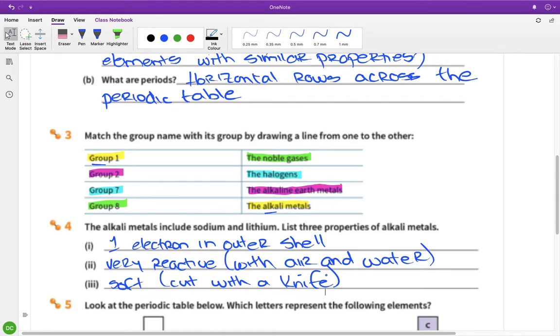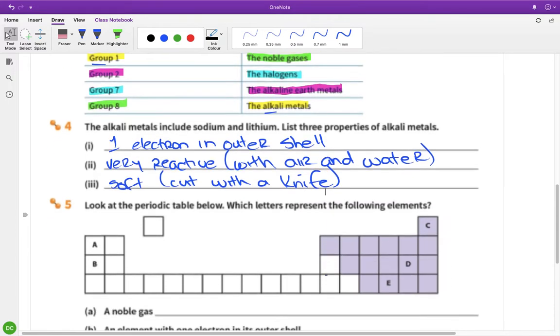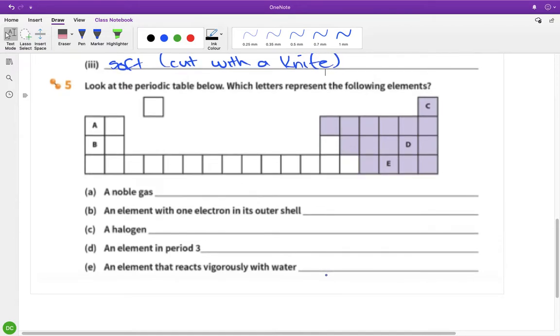And look at the period table below, which letters represent the following elements. So a noble gas - so noble gas is group eight, which is over here, so that has to be C. An element with one electron in its outer shell, and that's going to be A or B. A halogen is group seven, so that's D.